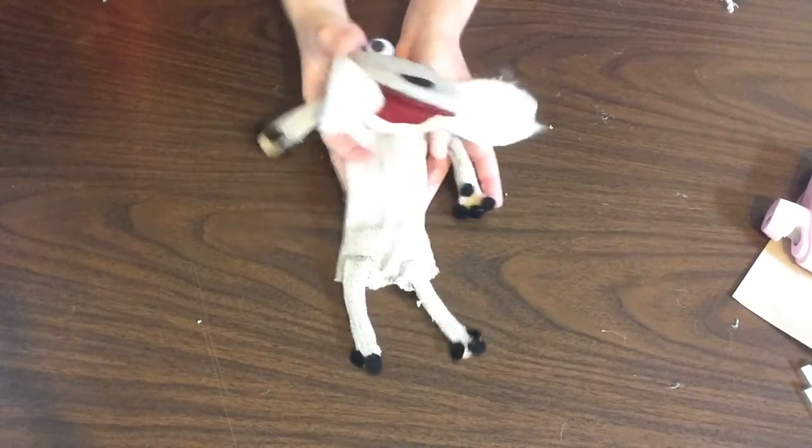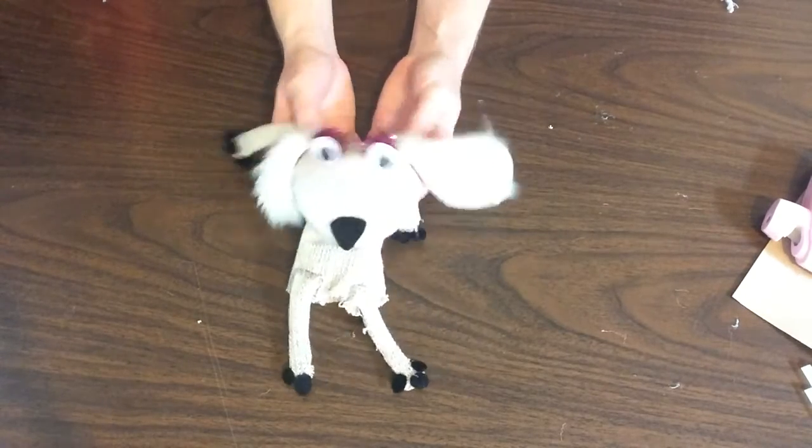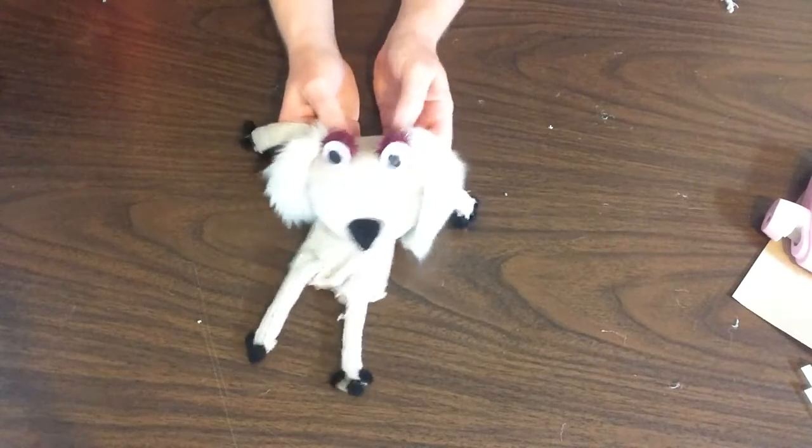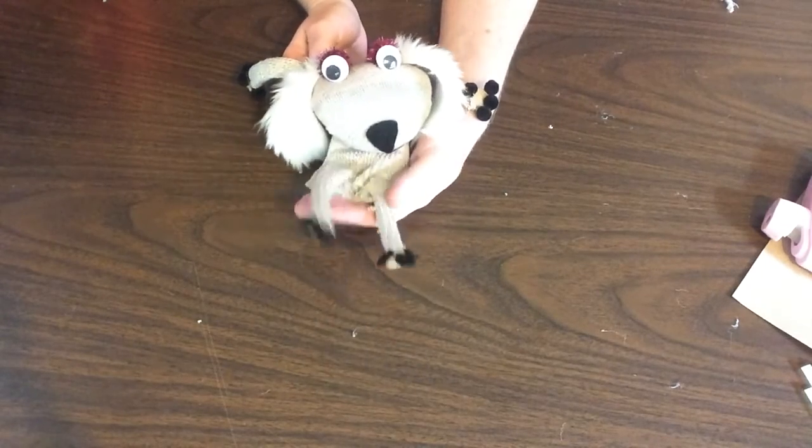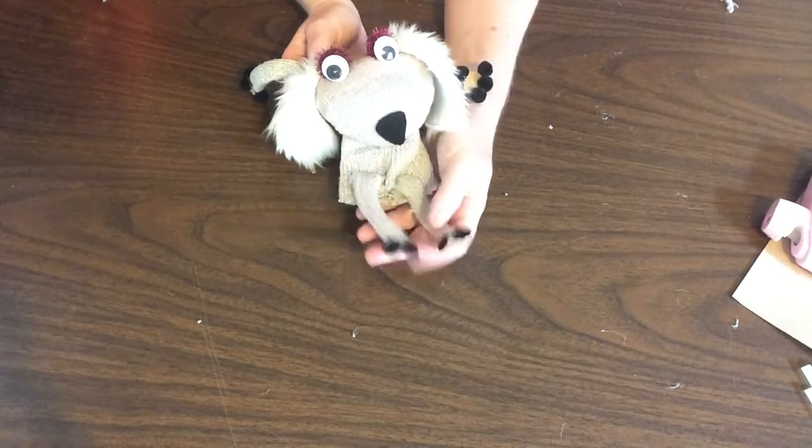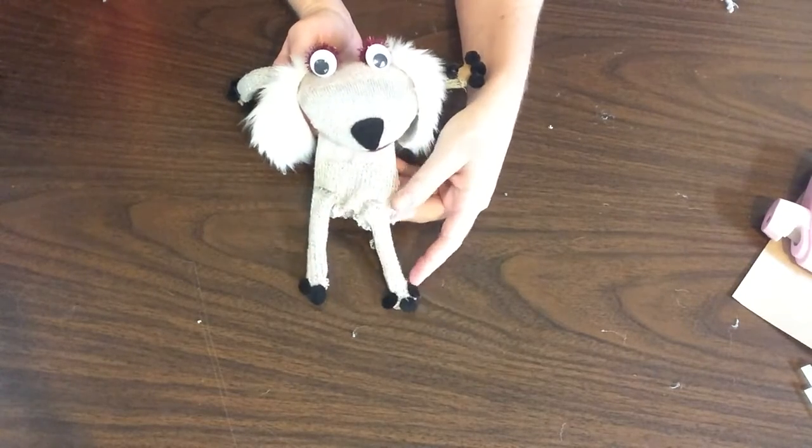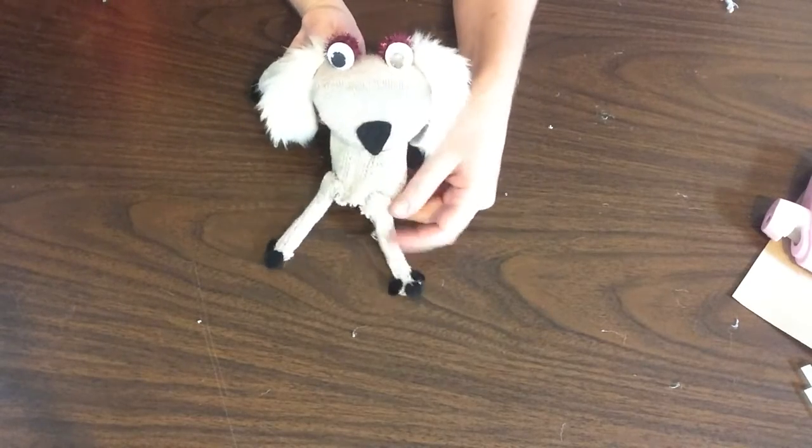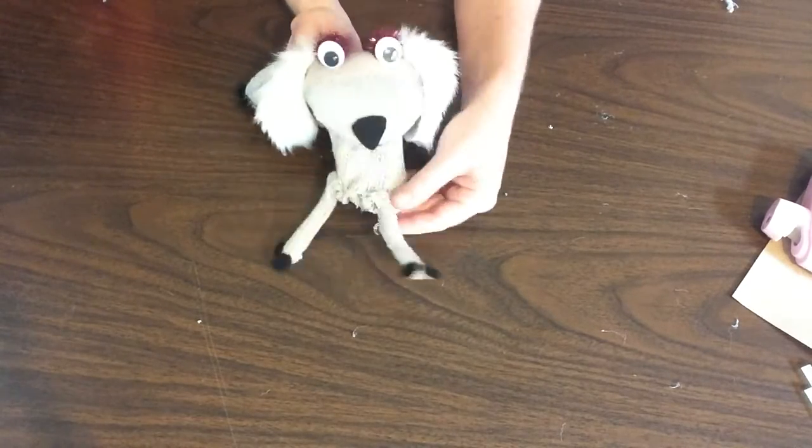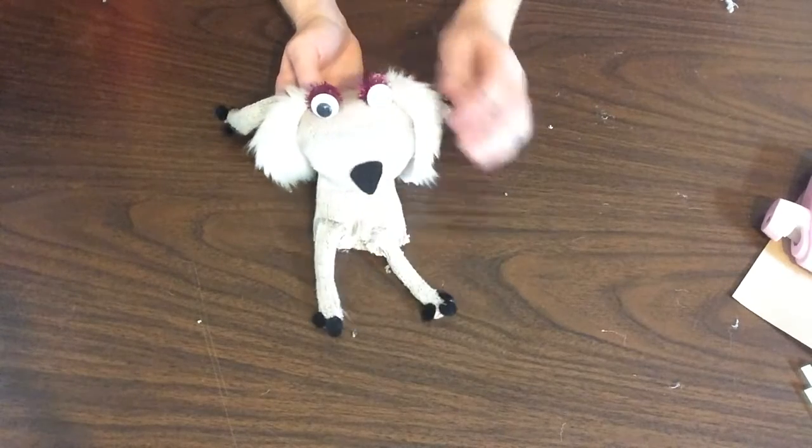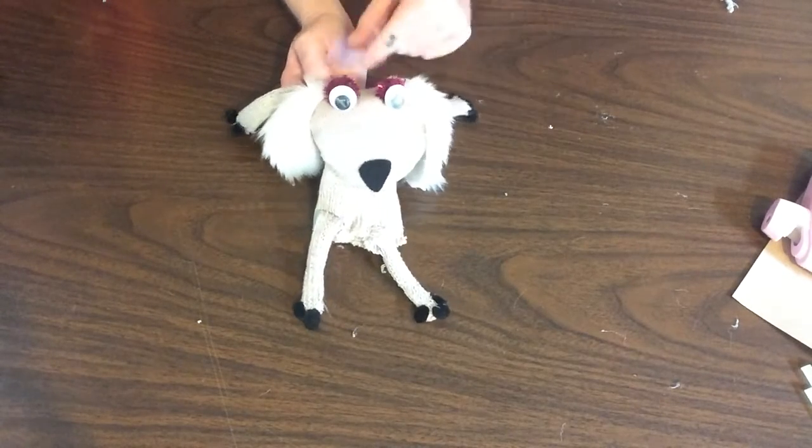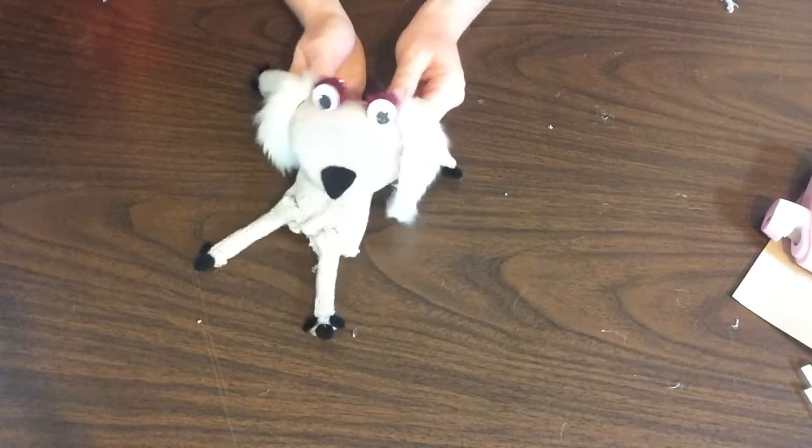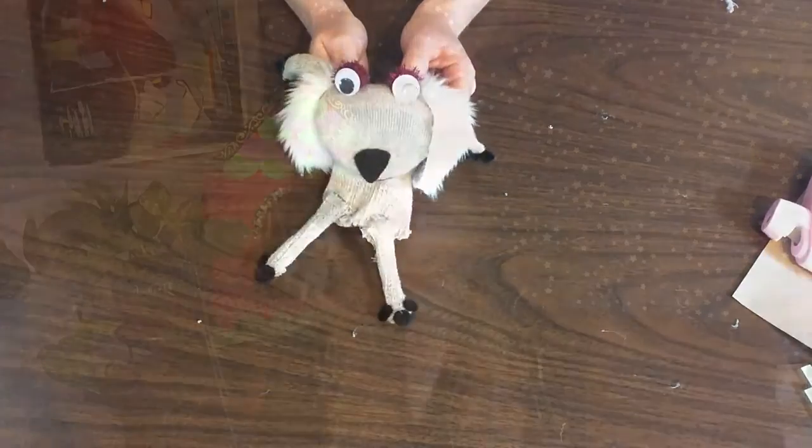So now you have your nice sock puppy all ready to go and perform. We'll talk about that in a moment. Go ahead and trim up any loose ends. I like to actually cut and sometimes hot glue the bottom of the sock right behind the legs. So you're welcome to do that. Otherwise, you are ready to name your puppet and to start performing.